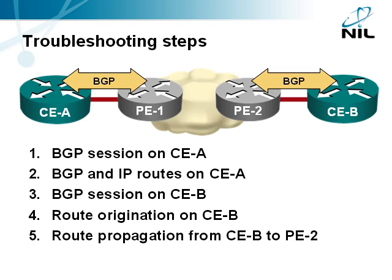Structured BGP troubleshooting is usually performed in these steps. You check the BGP session state on the client site. You check the BGP and IP routing tables on the client site. You check the BGP session on the server site. And finally, you check the BGP route origination and propagation on the server site.